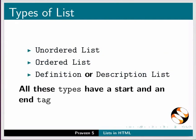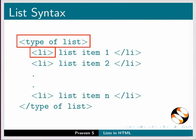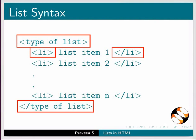All these types have a start and an end tag. This is how the syntax of a list will look like. Here, li denotes list item. The type of the list and the list item tags each have a start and an end tag.